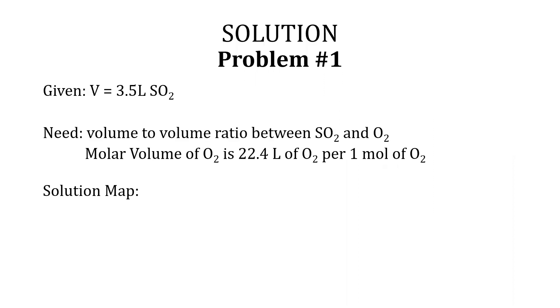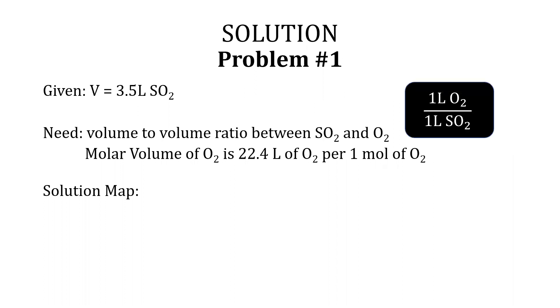Given the volume of SO2 is 3.5 L, one needs the volume ratio between SO2 and O2, which is 1 L of O2 over 1 L of SO2. Although not needed, the molar volume of any gas like O2 is 22.4 L per mole at STP. The solution map is volume in liters of SO2 to volume in liters of O2.